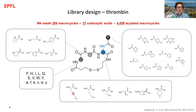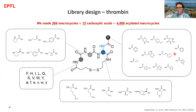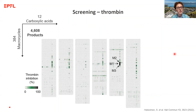We designed a library against thrombin. It started with the synthesis of 384 disulfide scaffolds made from a total pool of 27 Fmoc building blocks. We then reacted these 384 base macrocycles with 12 different carboxylic acids for around 4,500 acylated macrocycle products, and then took them for screening.